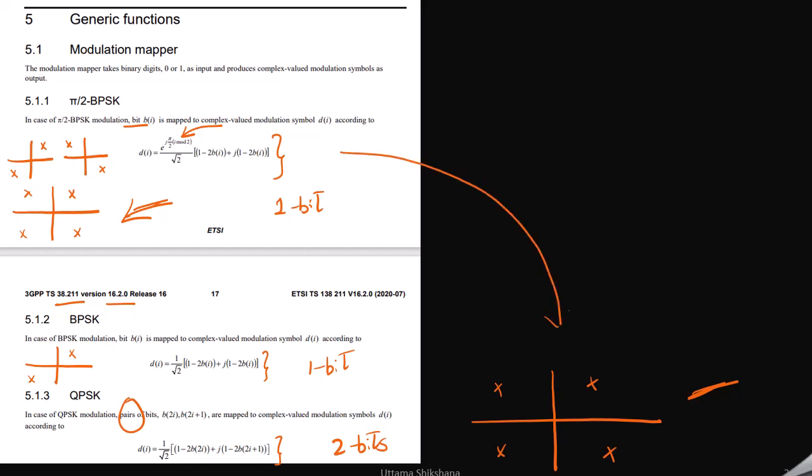Now we should be seeing the difference between π/2 BPSK and QPSK in terms of symbol transitions. If you carefully observe π/2 BPSK, if the first symbol is present here, the next symbol would be the odd symbol that would be present either at this point or this point.